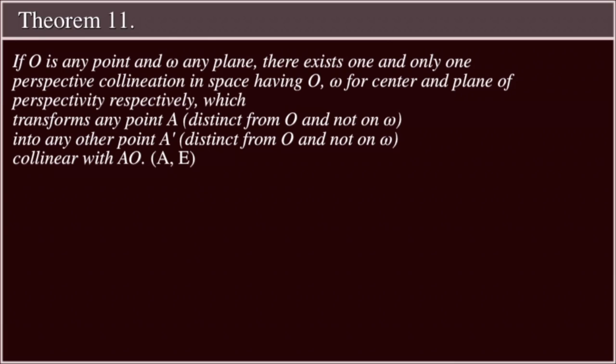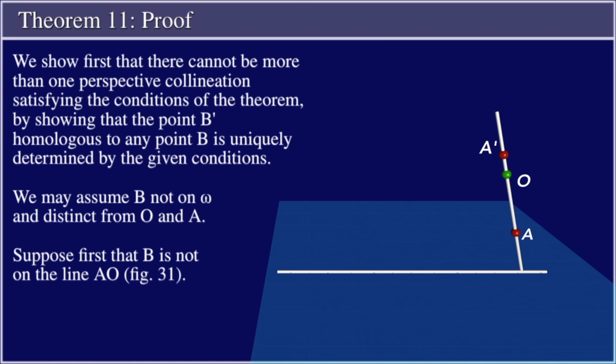Assumptions A and E. Proof: We show first that there cannot be more than one perspective collineation satisfying the conditions of the theorem by showing that the point B prime homologous to any point B is uniquely determined by the given conditions. We may assume B not on omega and distinct from O and A.